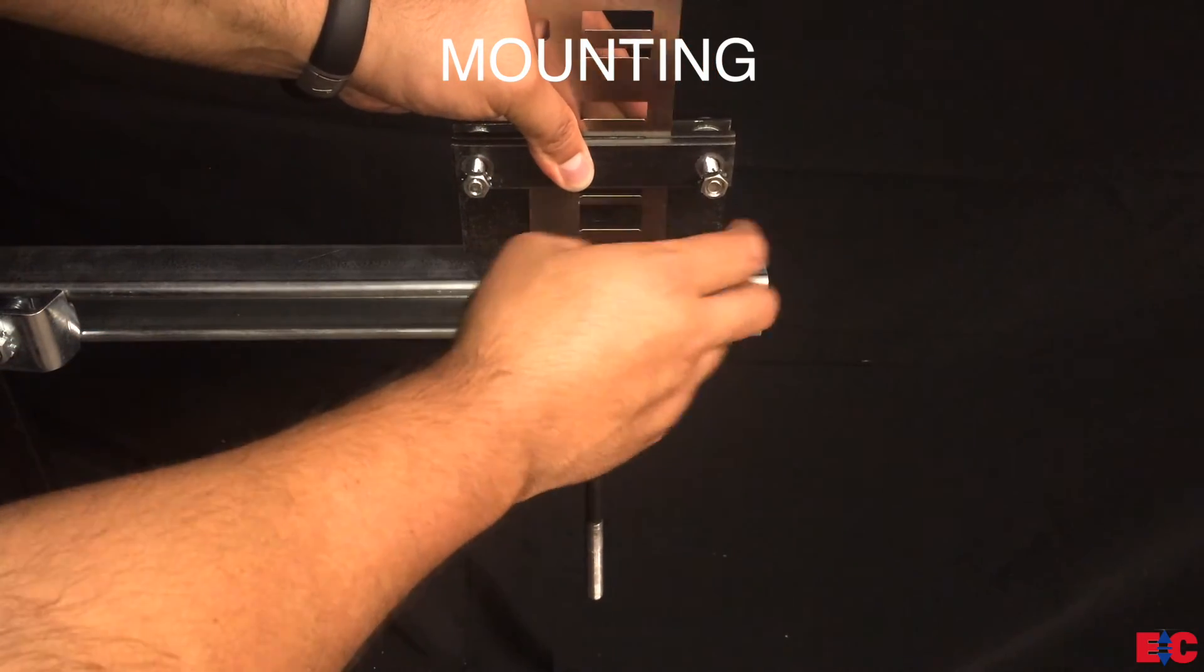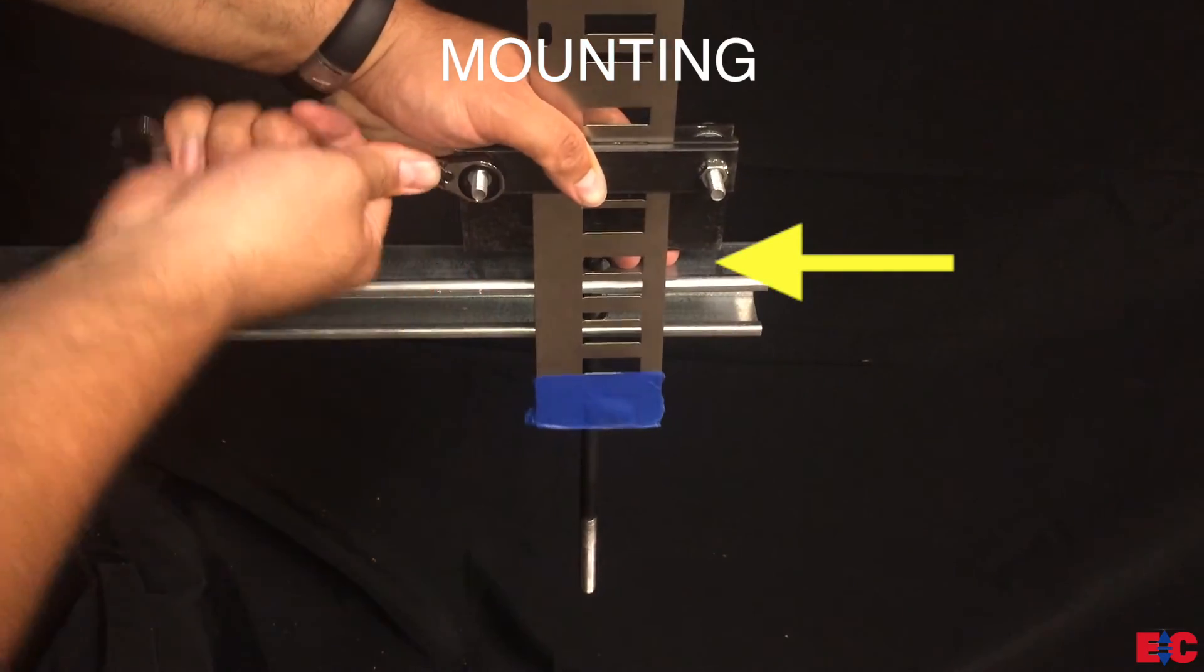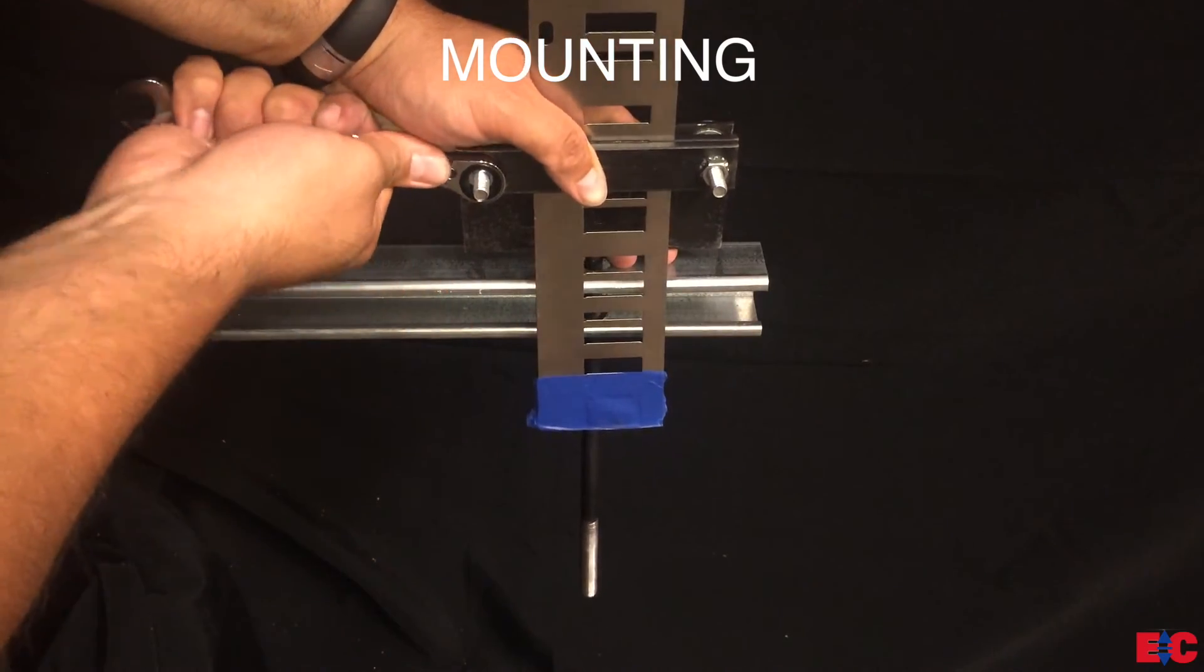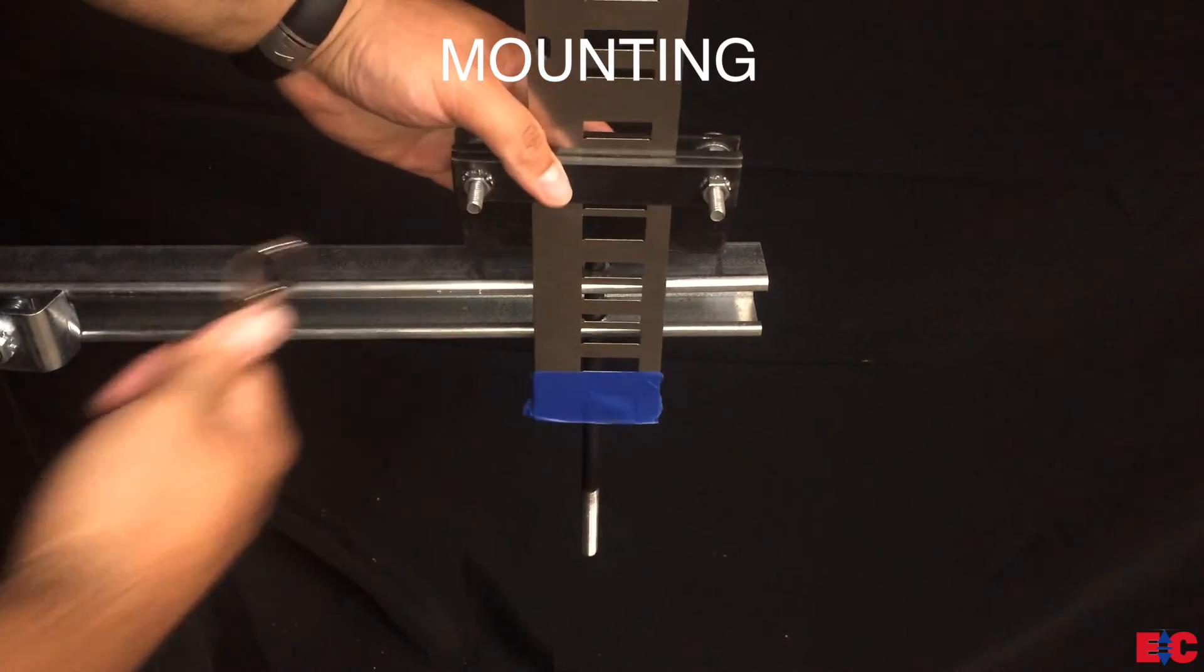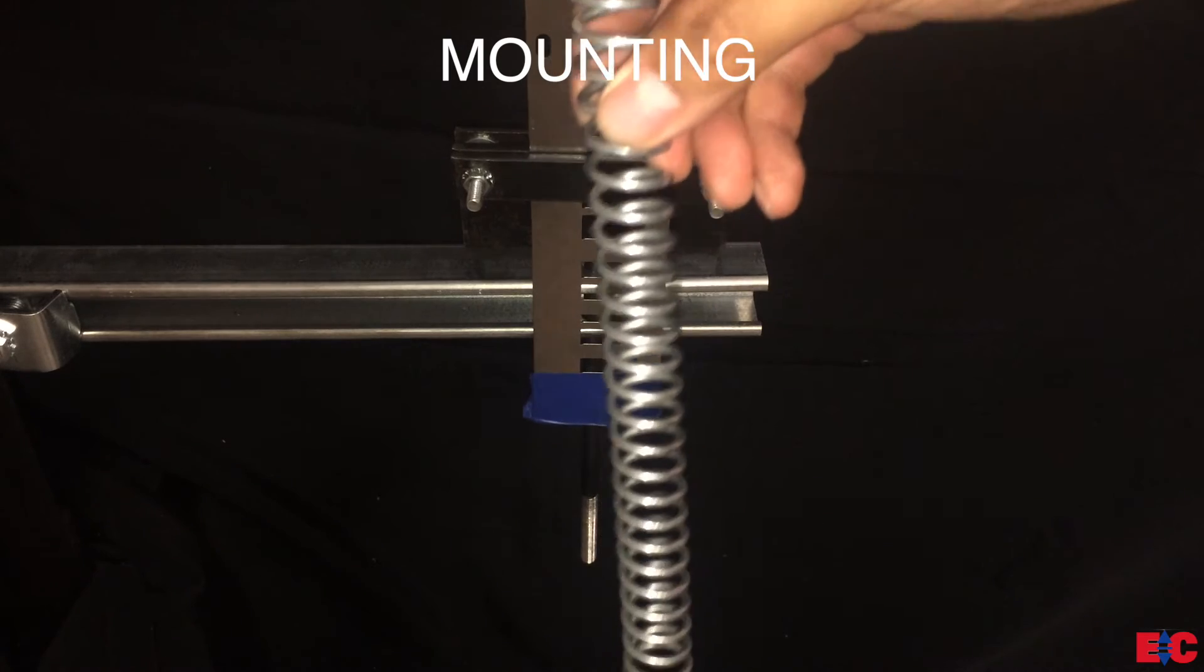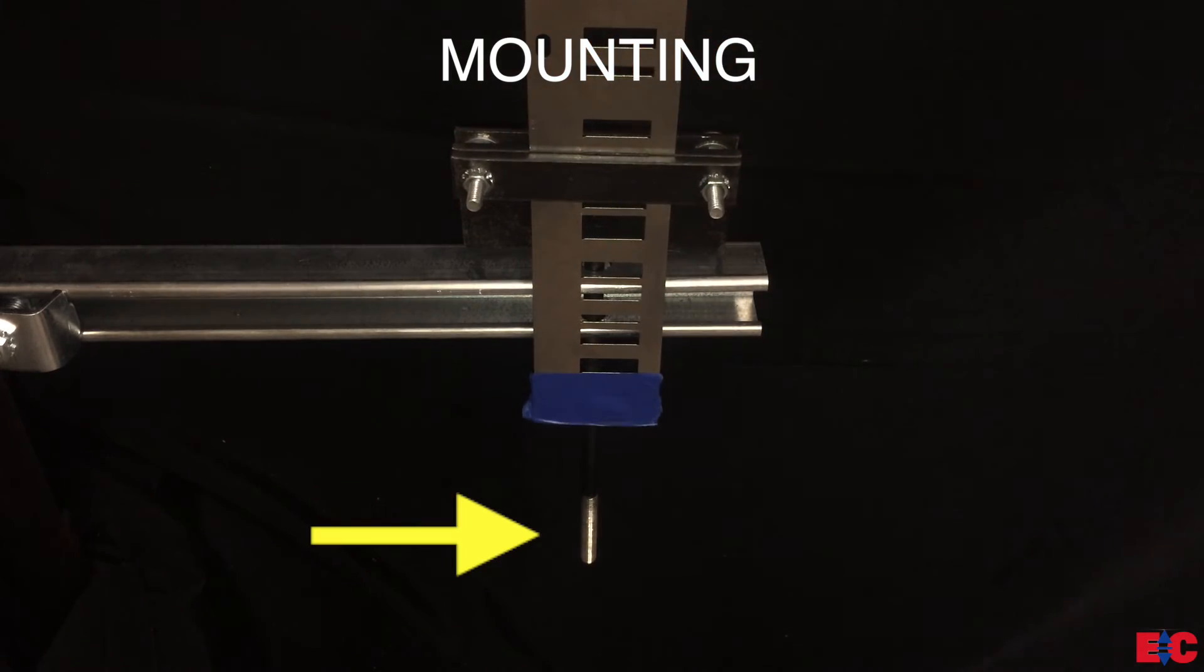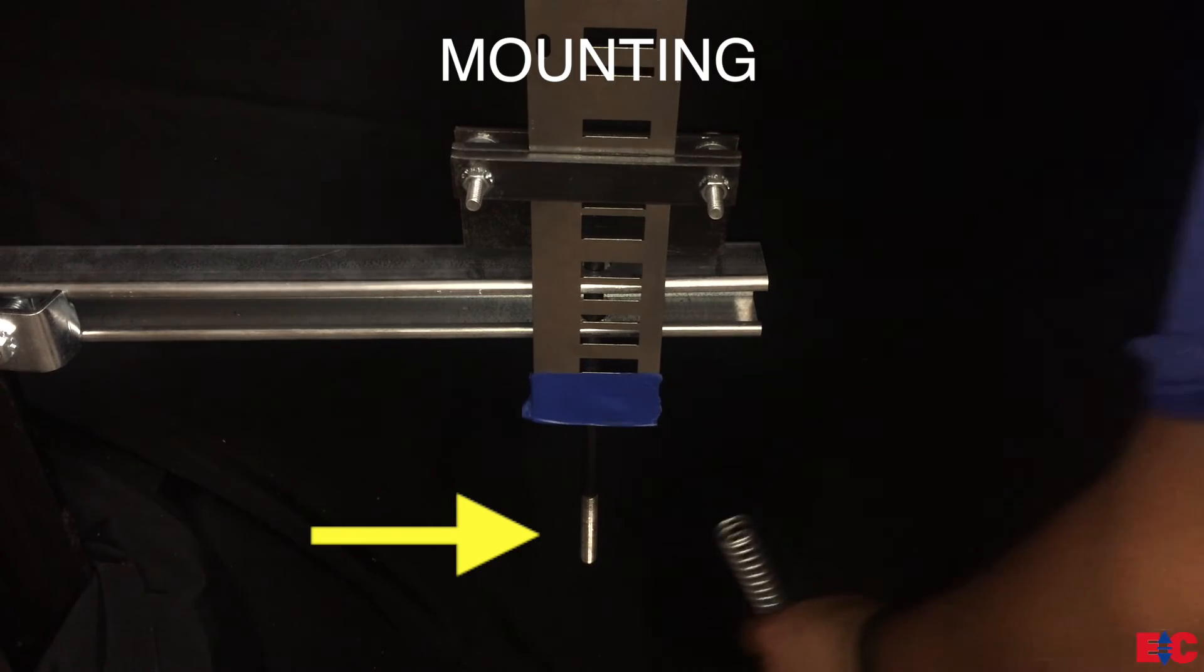Note, when you tighten the tape clamps, leave just a small gap between the tape mounting bracket and the bottom bracket. After fastening the clamps, take the spring and washer nut and place it at the bottom of the tape mounting bracket and fasten the washer nut until the Lambda tape sits plumb.